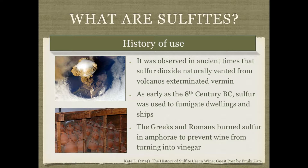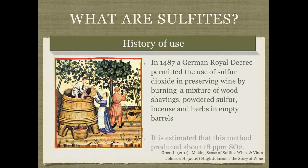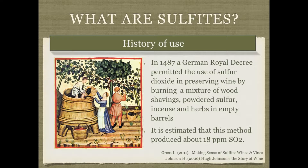The Greeks and Romans also learned to burn sulfur in their clay pots used to store wine to prevent it from turning into vinegar. They had no idea what the underlying science was, but they knew it was a trick to keep wine from turning. In the 1400s, the Germans were also using sulfites to preserve wine, burning a mixture of wood shavings, powdered sulfur, or incense and herbs — estimated to produce about 18 parts per million of sulfites.